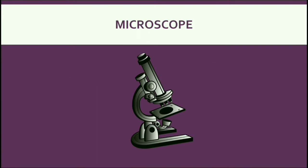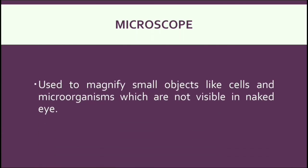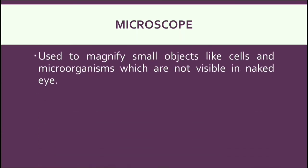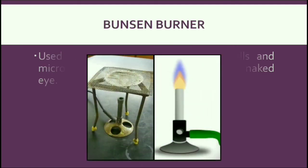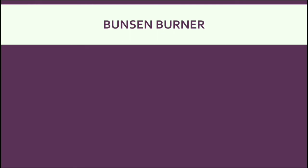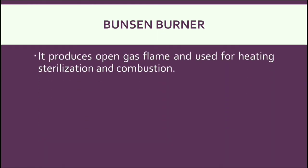The most important equipment of a biology lab is the Microscope. It's used to magnify very small objects like cells and microorganisms which are not visible to the naked eye. Next, Bunsen Burner. It's named after German chemist Robert Bunsen. It produces an open gas flame and is used for heating, sterilization, and combustion.